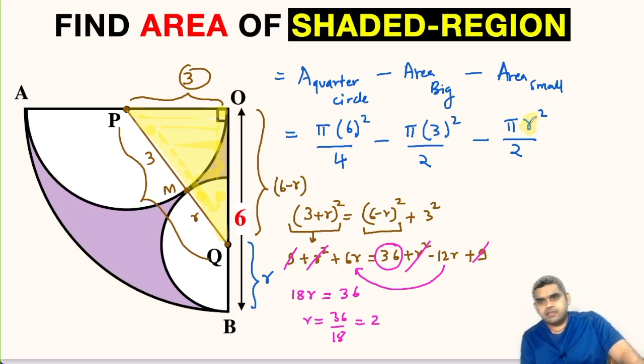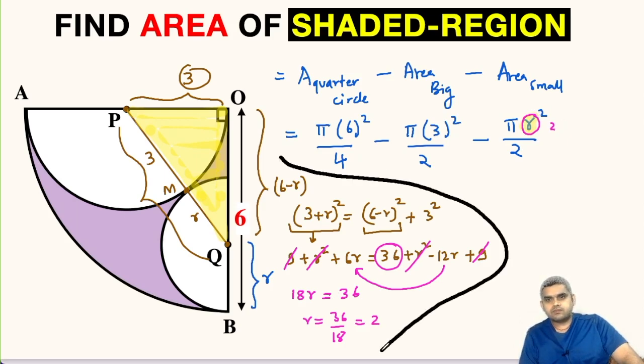So we can replace r by 2. Now let us simplify this. So this will be 6², 36 upon 4, 9. So first term will be 9π. Second one, 3² π will be 9π divided by 2, then minus 2² will be 4π by 2, that is 2π.